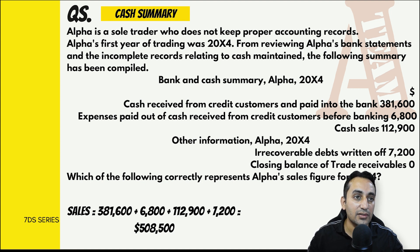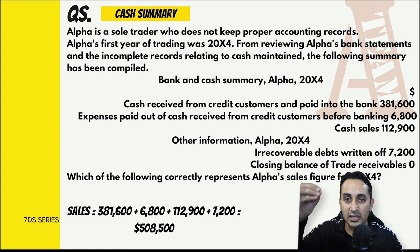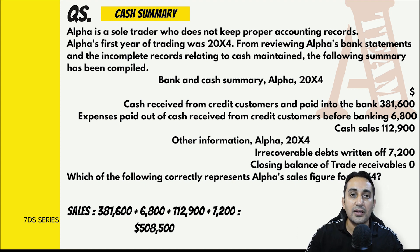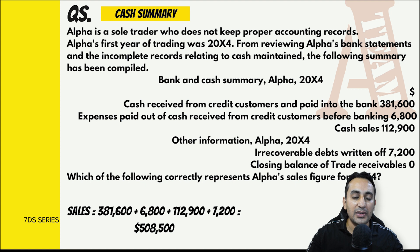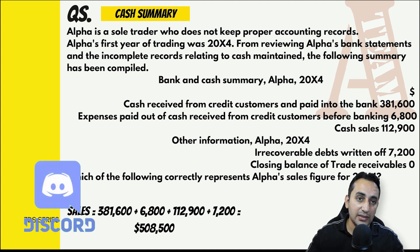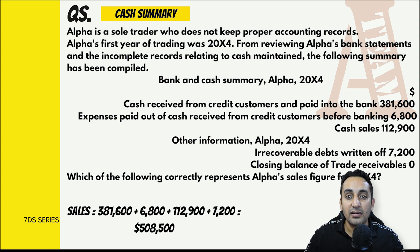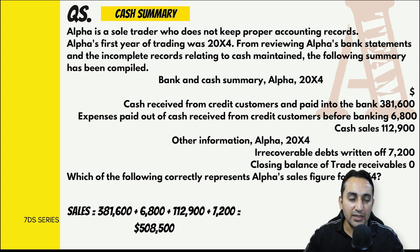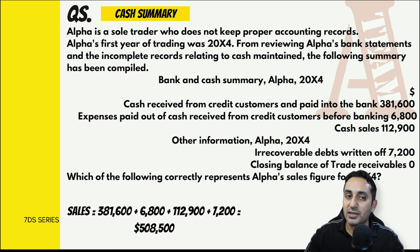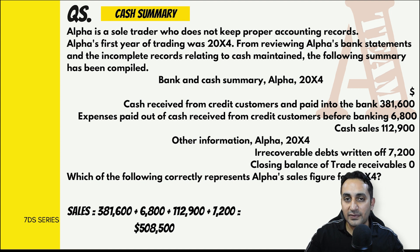Expenses paid out in cash received from credit customers before banking - पैसा आया था पर bank में जमा नहीं किया, खर्चे में लगा दिया - that was 6,800। साथ में cash sales का figure दे रखा है। Irrecoverable debt यानी जिन्हें माल बेचा था उन्होंने पैसे नहीं दिये - bad debts हो गए। इसी साल business शुरू किया तो opening balance zero है, trade receivables का closing balance भी zero है।